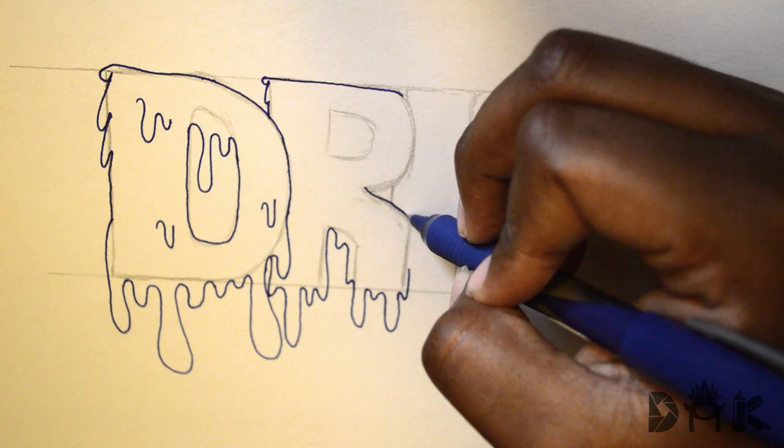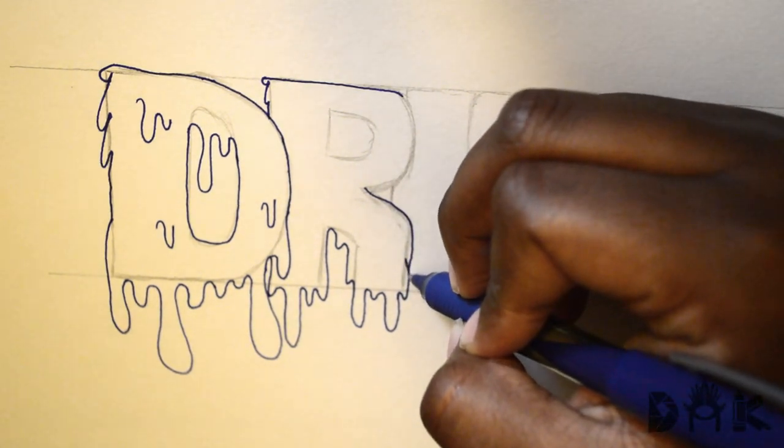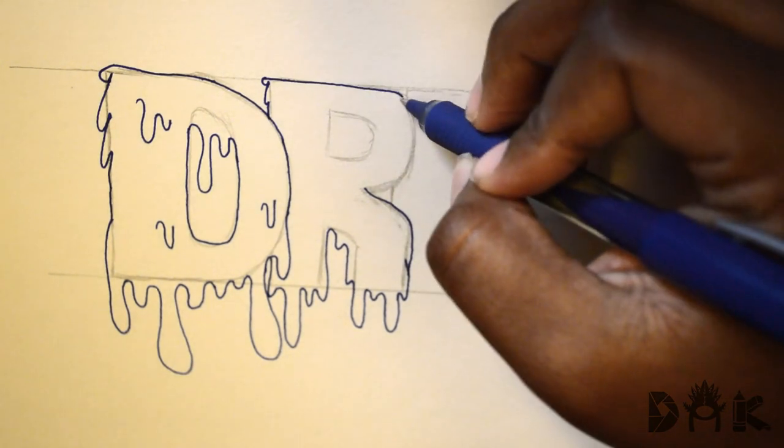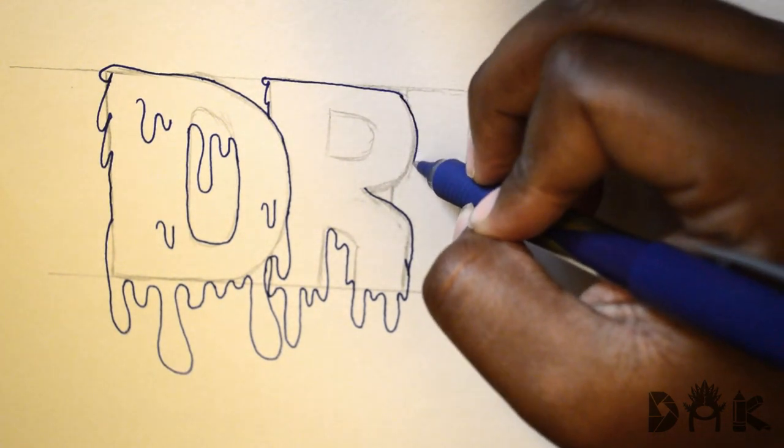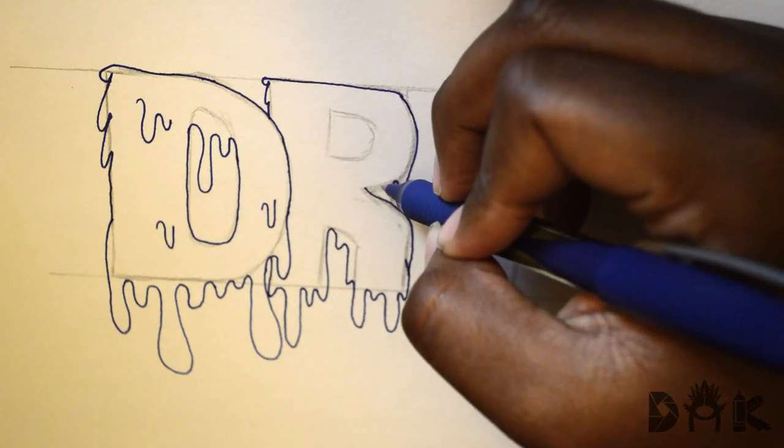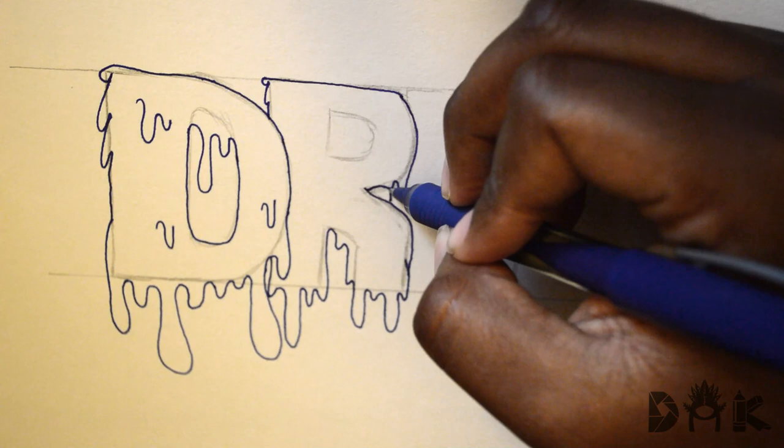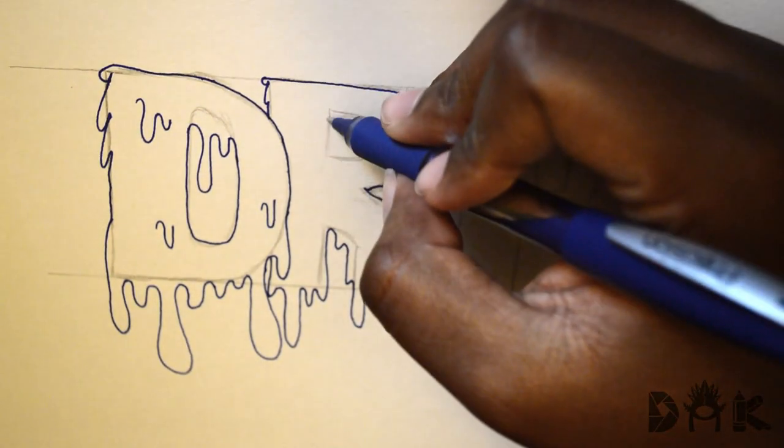The top doesn't need the drop effect. The sides do not need the drop effect. Literally anything that is at the bottom needs the drop effect, anything that has a cut off, like the holes in the R.